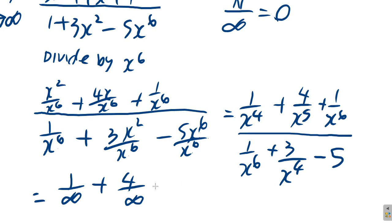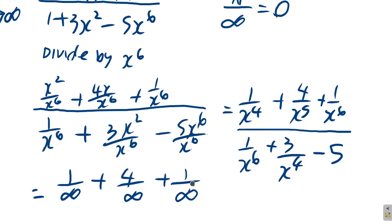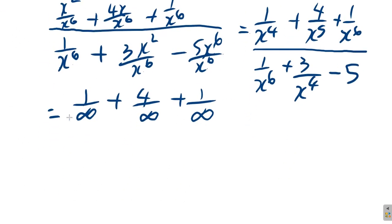So you don't have a specific value for it, so just write infinity there, plus 1 over an infinity large number to the 6. It gives you an infinity large number over 1 over infinity large number plus 3 over infinity large number minus 5.